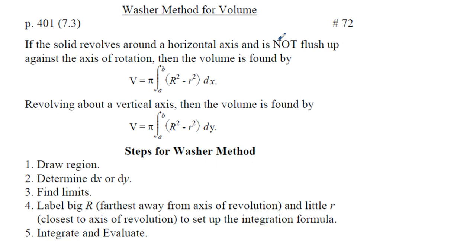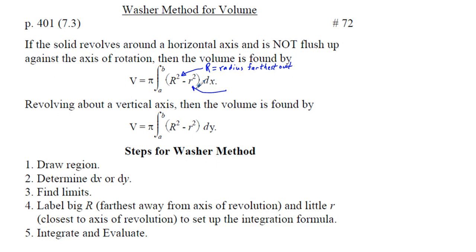If the solid revolves around a horizontal axis and is not flushed up against the axis of rotation, then the volume is found by pi times the integral from a to b of big R squared minus little r squared dx. Big R squared is our radius farthest out, and little r equals the nearest radius.